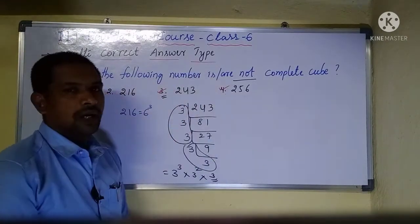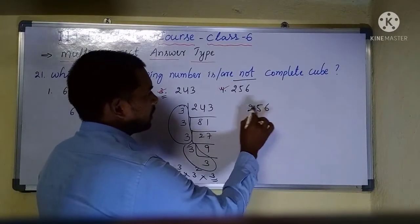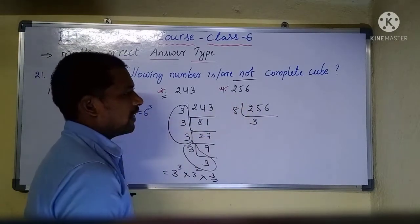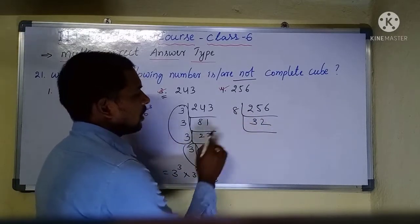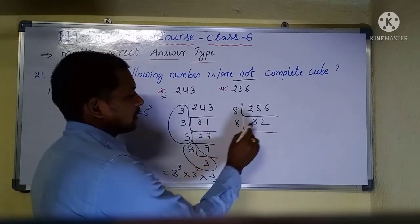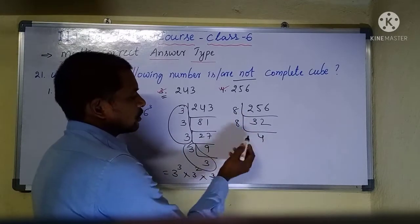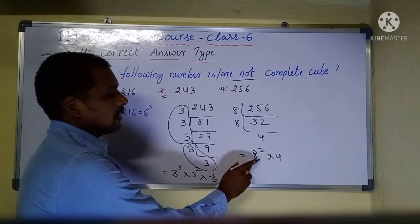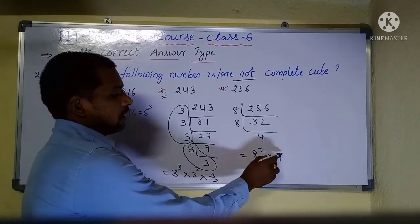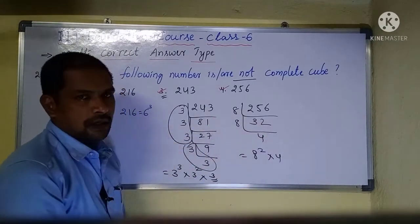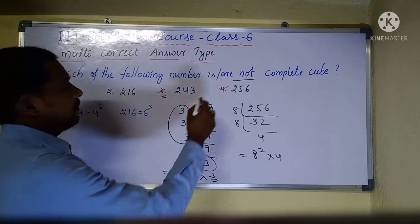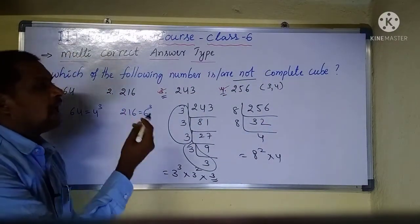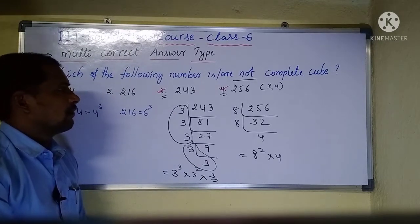Coming to 256 — if you divide 256 by 8, and then again by 8, you find 8 appears twice with a remainder of 4. Since 8 does not repeat 3 times evenly, 256 is not a perfect cube. So option number 3 and option number 4 are not perfect cubes.